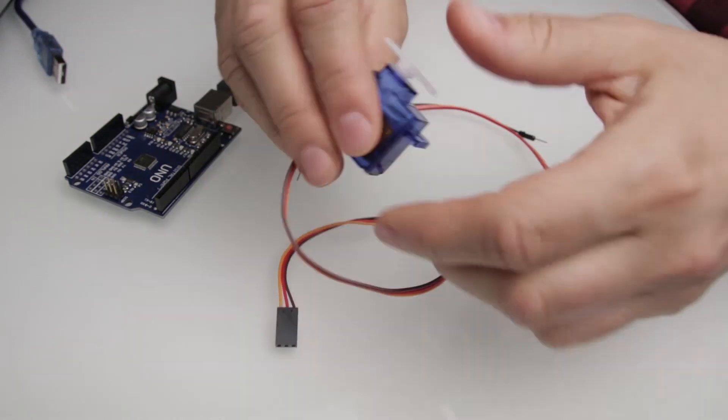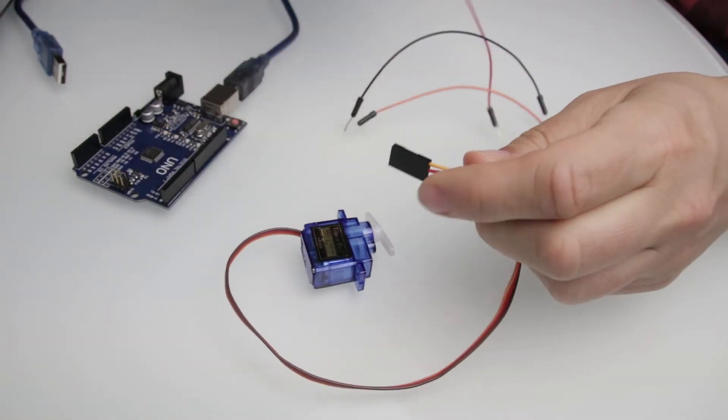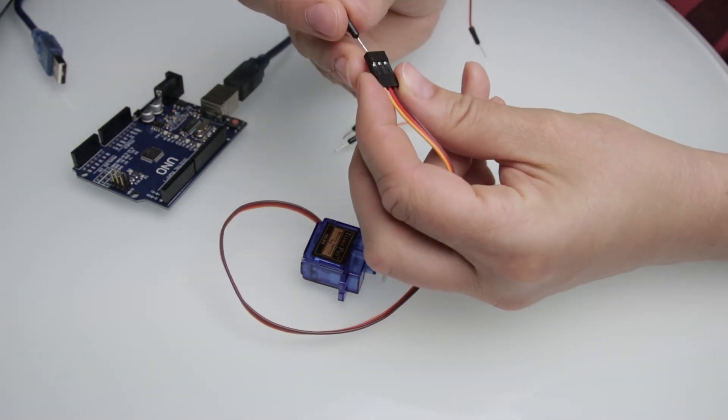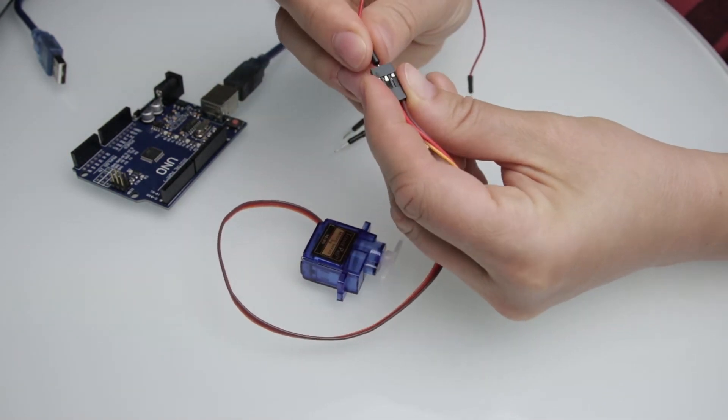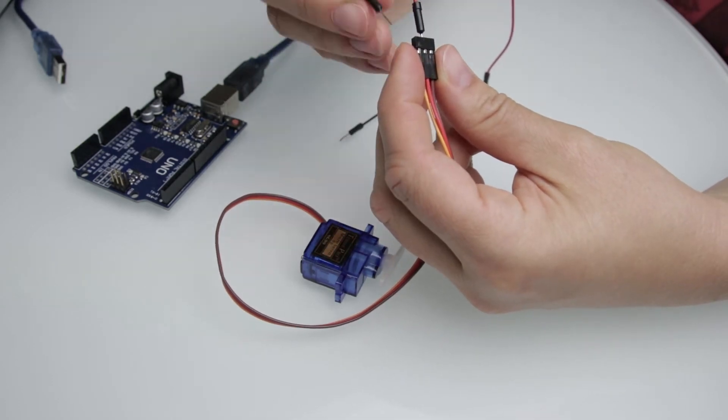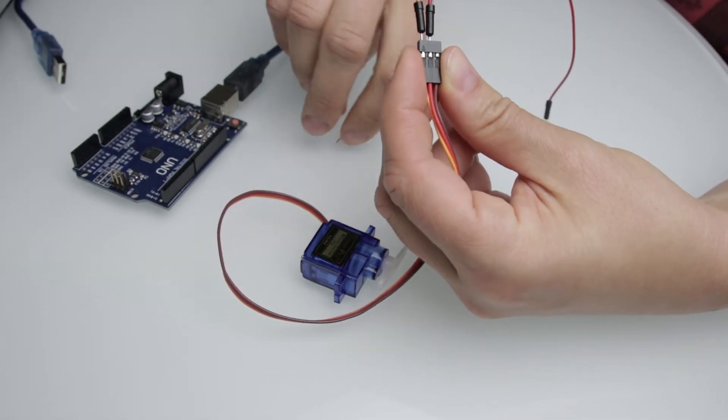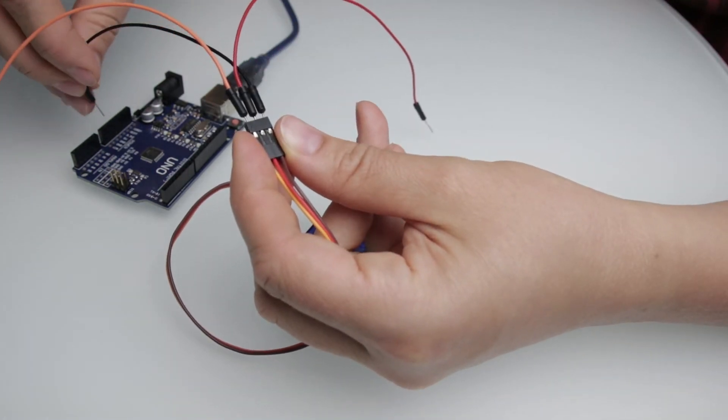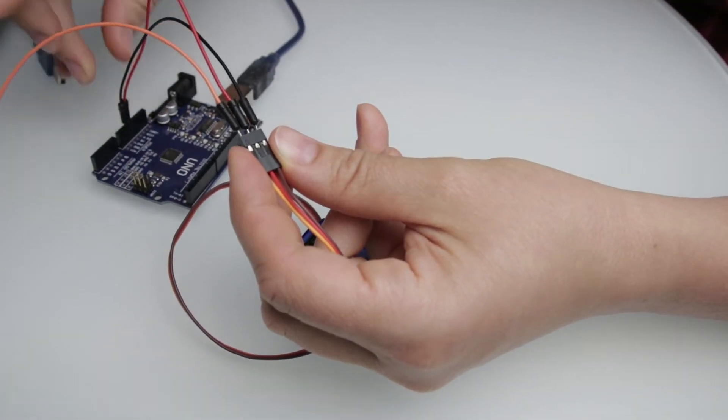Let's do the wiring now. I am connecting the power wire, then the signal wire, and finally the ground wire with the jumper wires. The other side of the jumper wires go to the ground, 5 volts, and D9 pins.